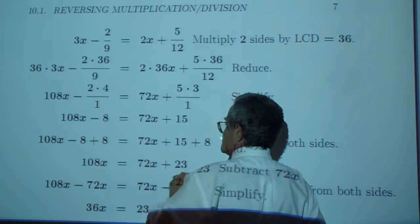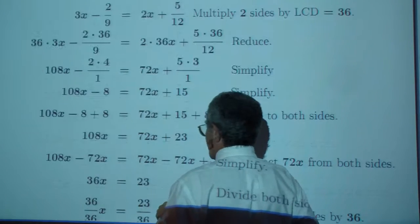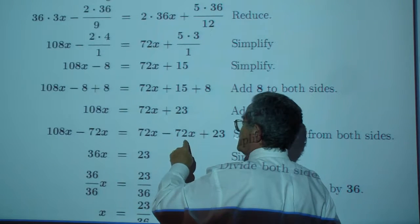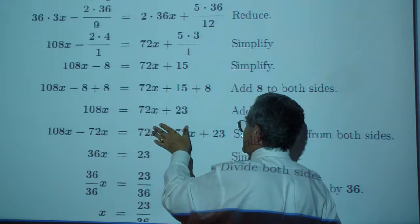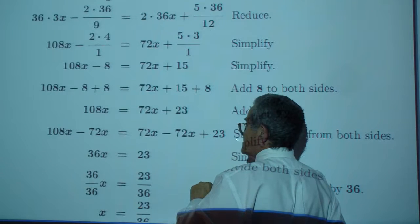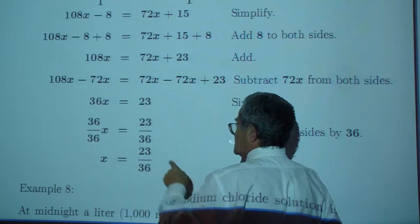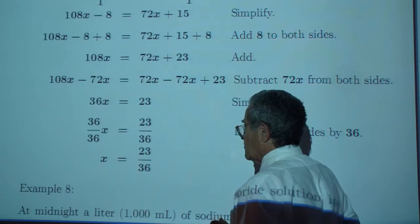So, 108x minus 8 is 72x plus 15. Add 8 to both sides. You're left with 108x. Subtract 72x. You have the x's drop out from the right side. And then final step. Divide both sides by 36. So, x is 23 over 36.